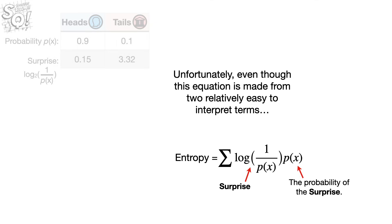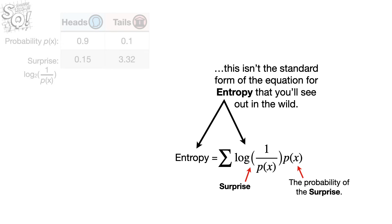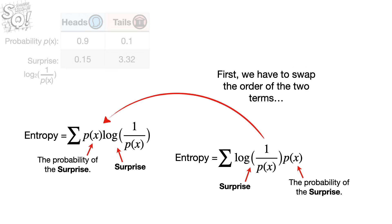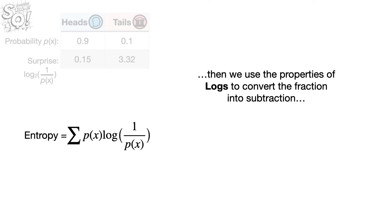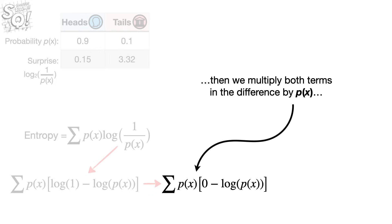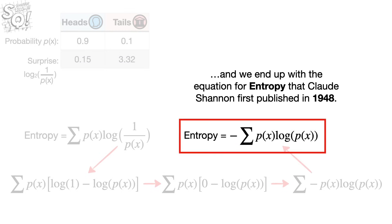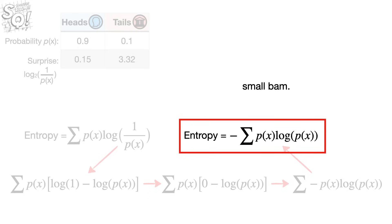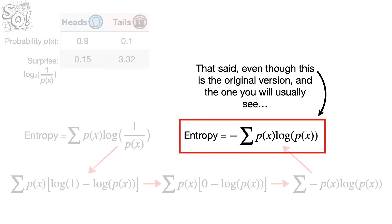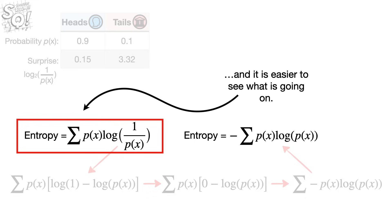Unfortunately, even though this equation is made from two relatively easy to interpret terms — the surprise times the probability of the surprise — this isn't the standard form of the equation for entropy that you'll see out in the wild. First, we have to swap the order of the two terms. Then we use the properties of logs to convert the fraction into subtraction, and the log of 1 is 0. Then we multiply both terms in the difference by the probability. Lastly, we pull the minus sign out of the summation. And we end up with the equation for entropy that Claude Shannon first published in 1948. That said, even though this is the original version and the one you'll usually see, I prefer the derived version since it is easily derived from surprise and it is easier to see what is going on.